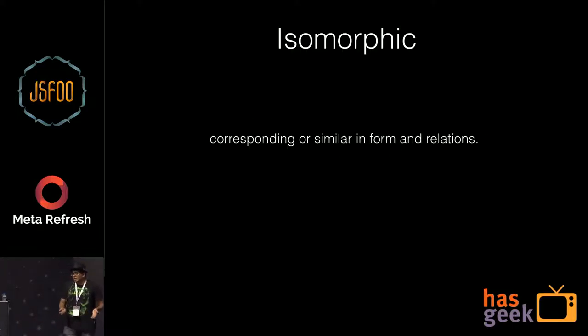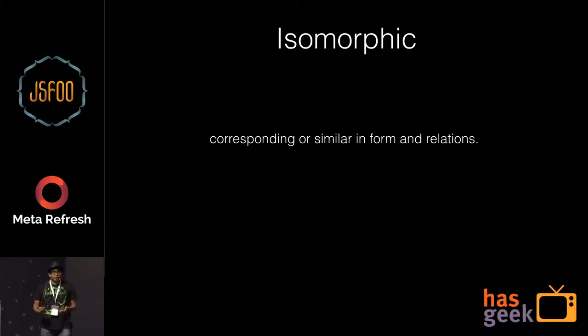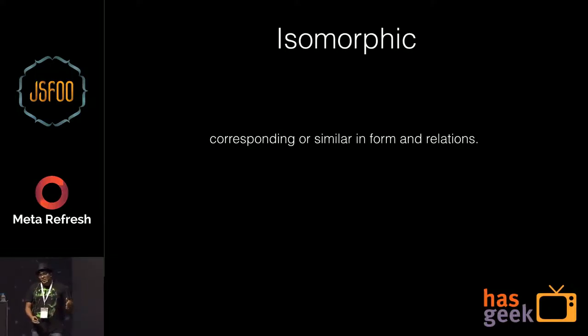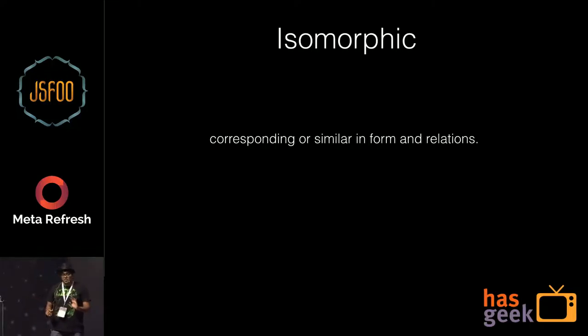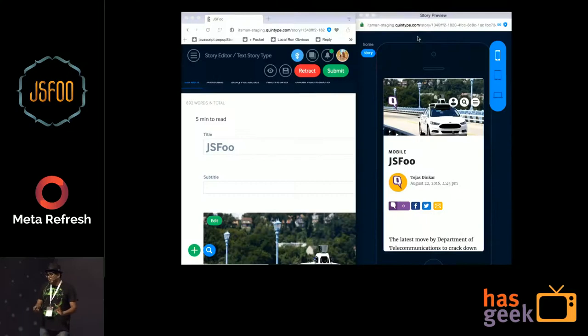So what is isomorphic, really? It basically means similar in form and relation — that's the Wikipedia definition. I really don't know how that relates, but what it means is that you're rendering the same thing server-side and client-side. That's what I want to speak about: different patterns for this.